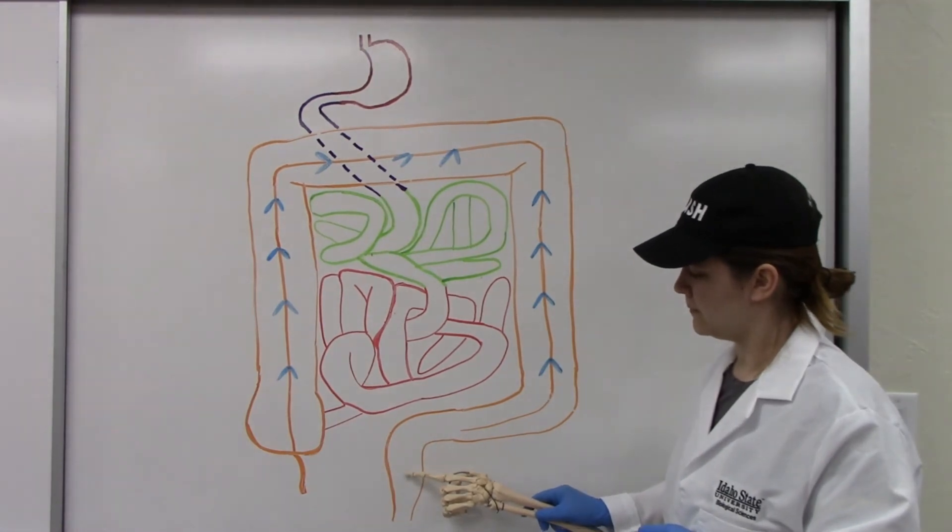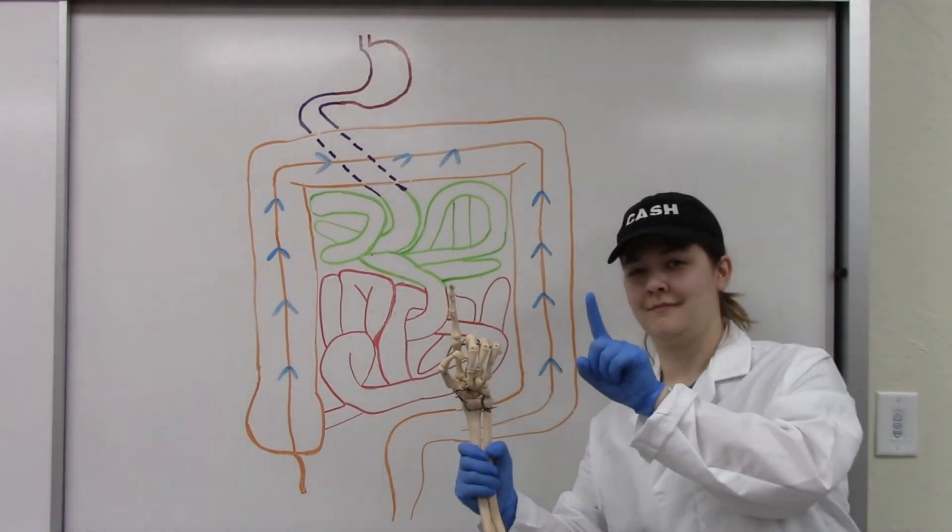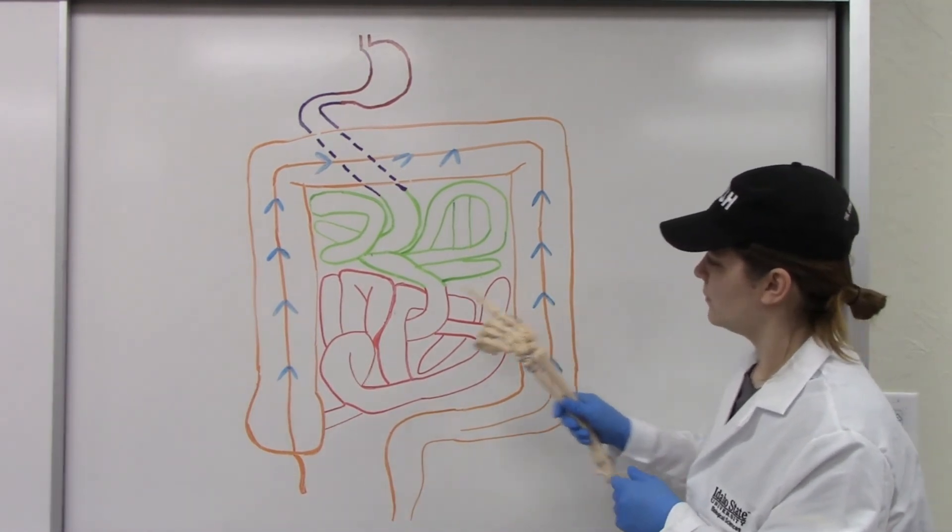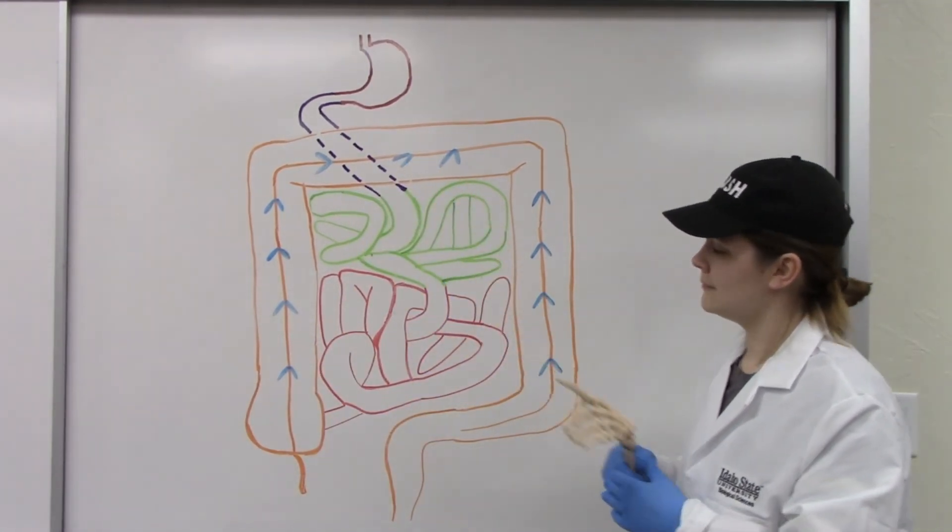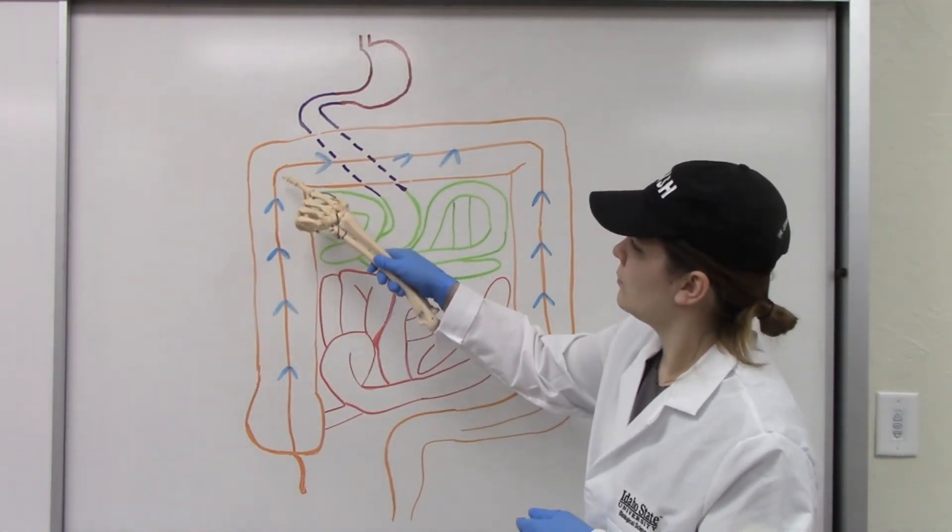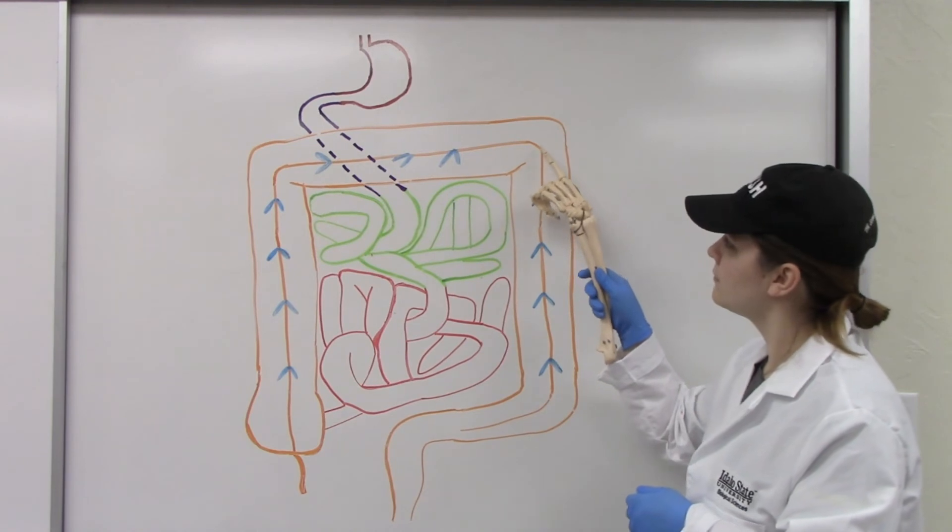Two additional structures that are present on the entirety of the large intestine are the epiploic appendages, which are fatty tassels, and the tinea coli, which refers to three bands of smooth muscle which run longitudinally along the colon.